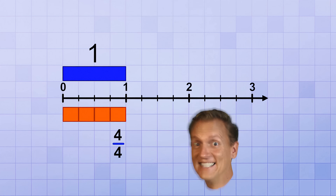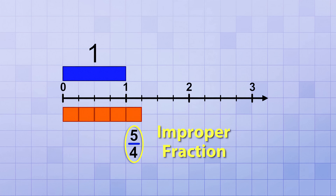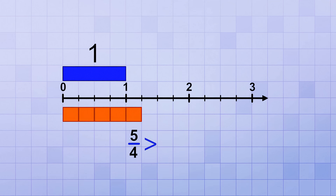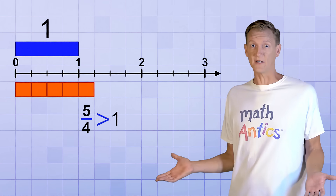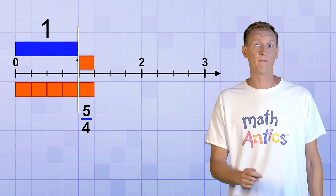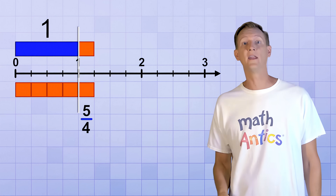But now, what if we get a little crazy and add 1 more fourth? Now we have 5 fourths and we've gone past 1 on the number line. 5 fourths, or 5 over 4, is what we call an improper fraction because the numerator — the top number — is greater than the denominator — the bottom number. That means its value is greater than 1. In this particular case, on the number line we've gone past 1 by the fractional amount 1 fourth, so 5 fourths turns out to be equivalent to 1 and 1 fourth.